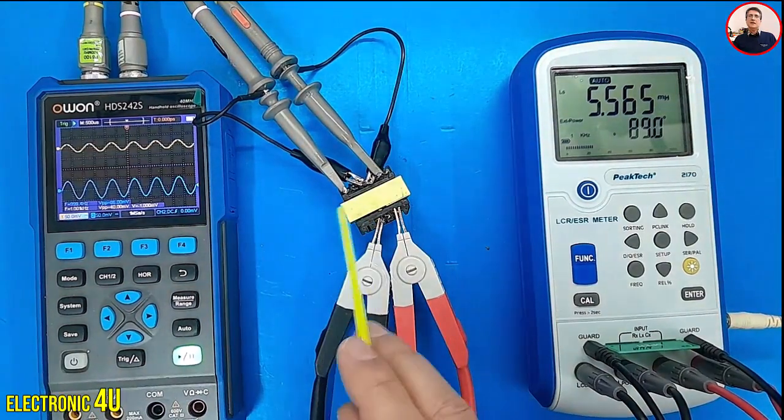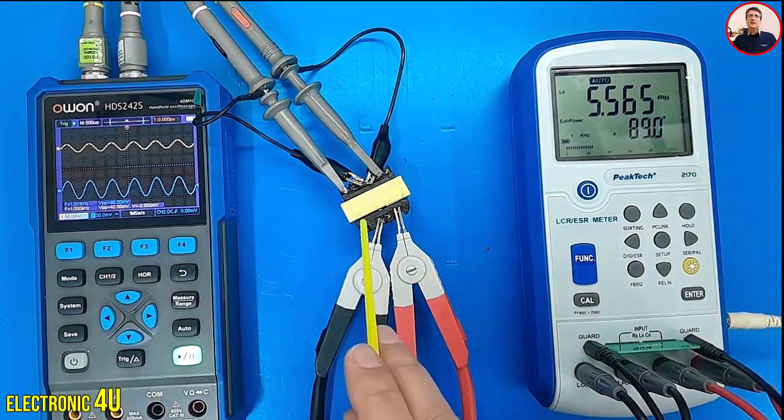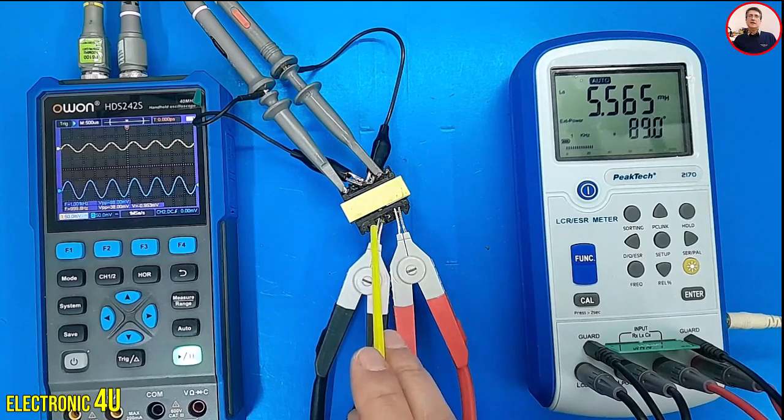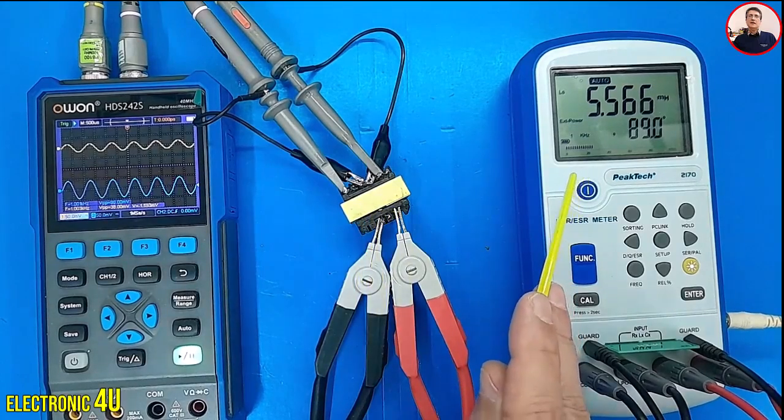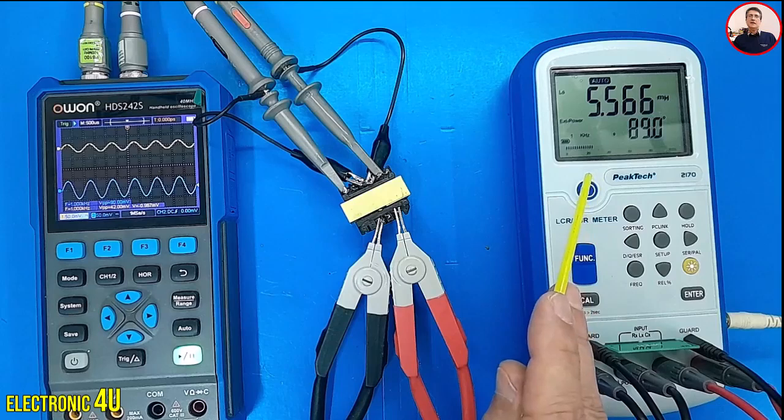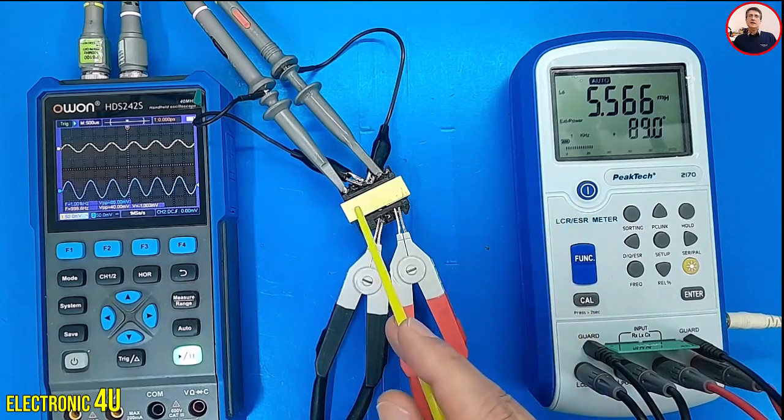So, by this method, we can ensure the transformer works by injecting a signal into the input or output winding and checking the phase angle. This number should be close to plus 90. Then, by shorting the winding, we check the phase change.